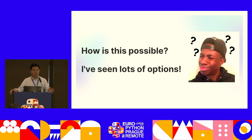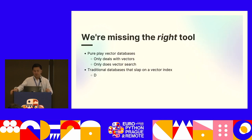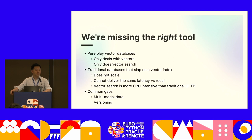How is this really possible? If you're paying attention to the generative AI space, you see lots of different options. It seems like every week a new vector database is released, and every other week a traditional database has added some sort of vector index to their offering. So it's not that we're missing options — we're missing the right tools. Because a new era of technology will have different use cases, different access patterns, and will demand different data infrastructure.